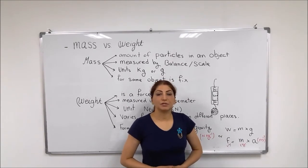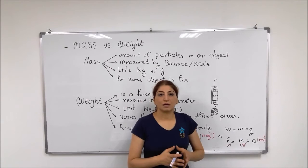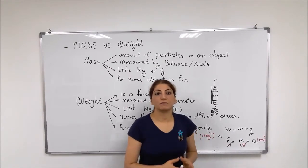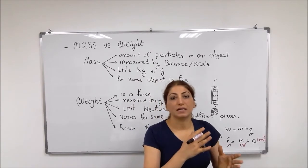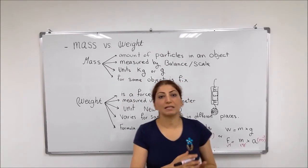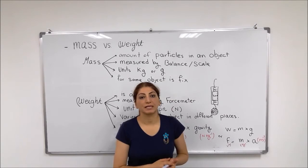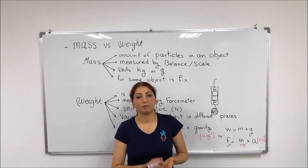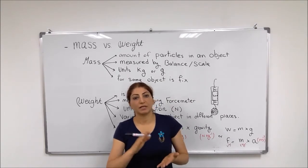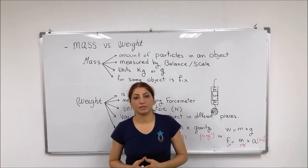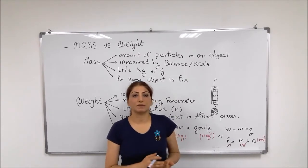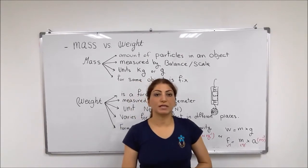Then you come with this formula M2 minus M1 which is the mass of the both beaker and the liquid minus the mass of the empty container. So it gives you the mass of the liquid, which means M2 minus M1 becomes the mass of the liquid.